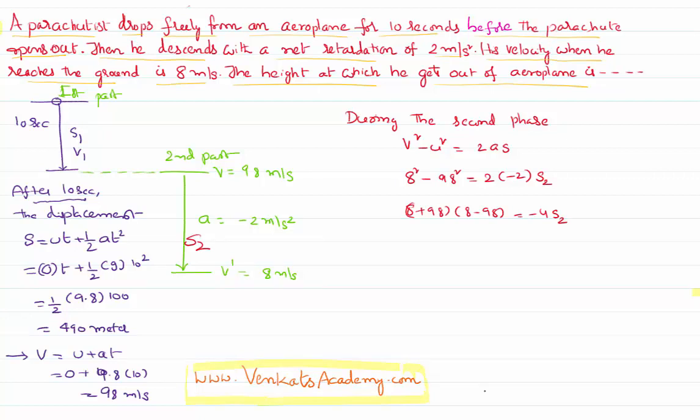8² - 98² = -4s₂. So 64 - 9604 = -4s₂, which gives -9540 = -4s₂.